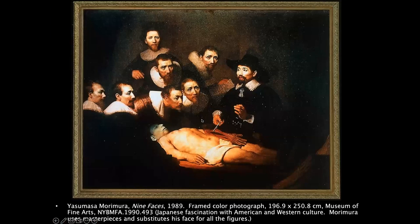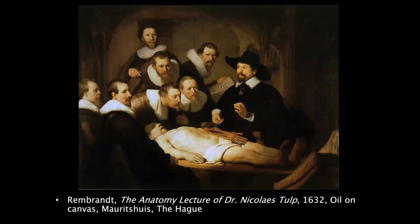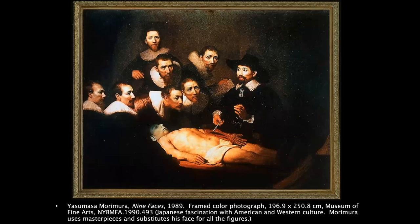This is Yasumasa Morimura and his 'Nine Faces.' He liked to look at Western art and iconic images and recreate them through photography. As you can see, this is a framed color photograph — but what he changed is that every person in the photograph is Morimura. Every figure, even the corpse being worked on, is him. This represents the Japanese fascination with American and Western culture — a big deal in the 80s but still visible today — where the consumption and creative use of Western culture becomes something new in Japanese culture, then makes its way back West.